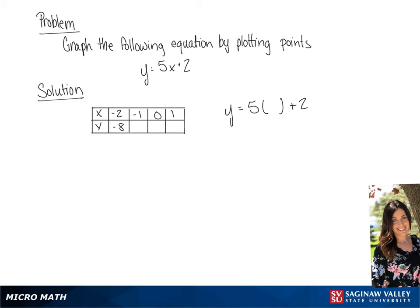Now for the second point, we're going to replace x with negative 1, and we get negative 5 plus 2, which equals negative 3.